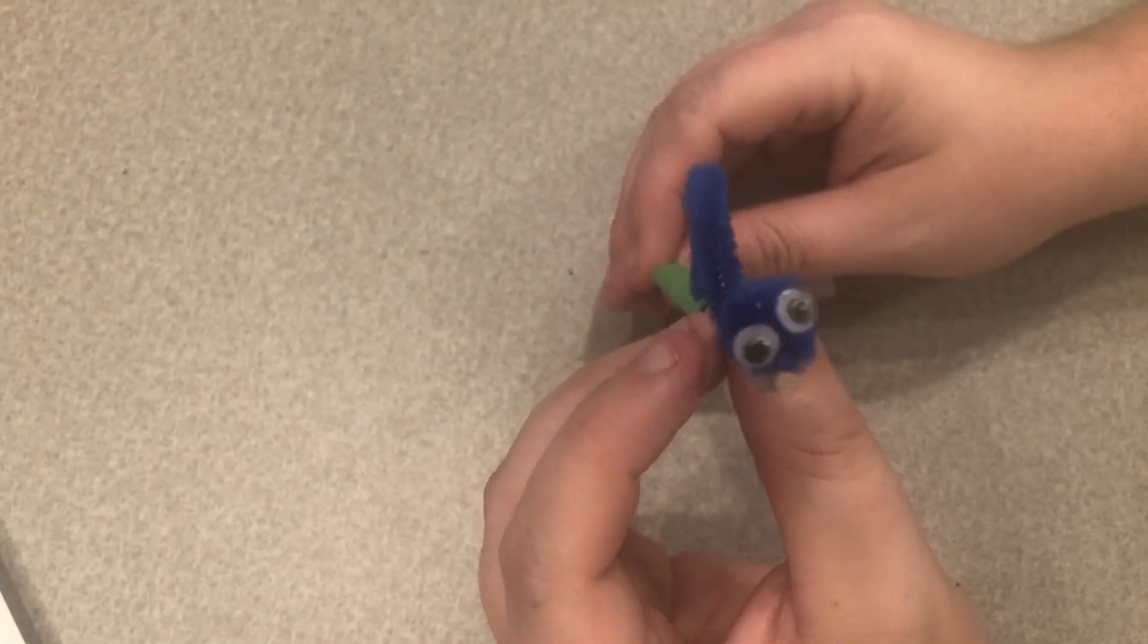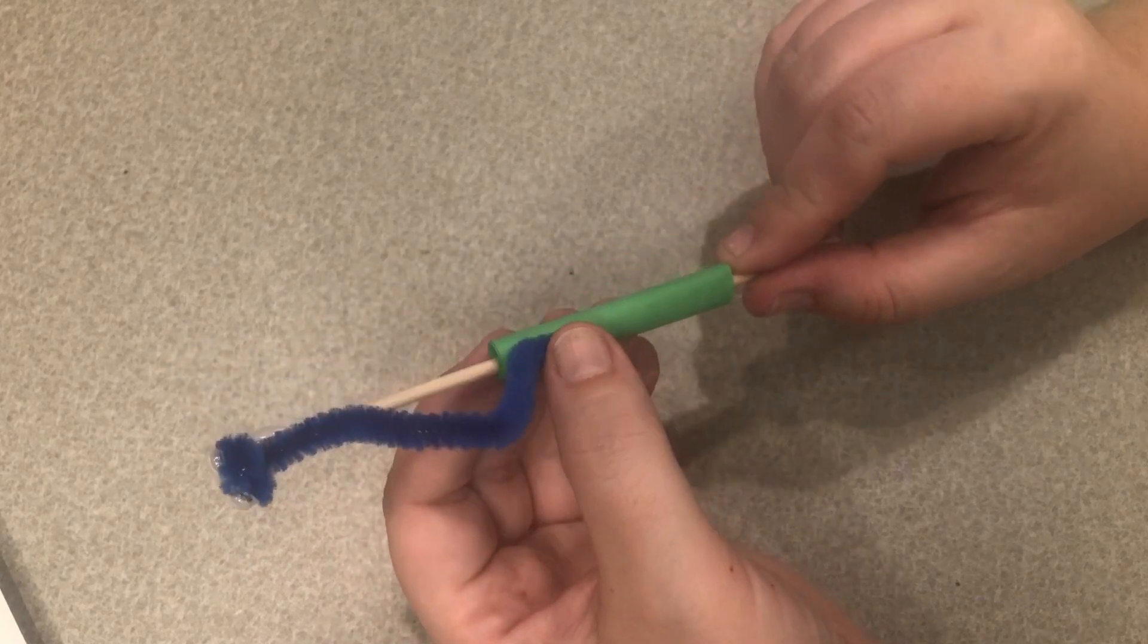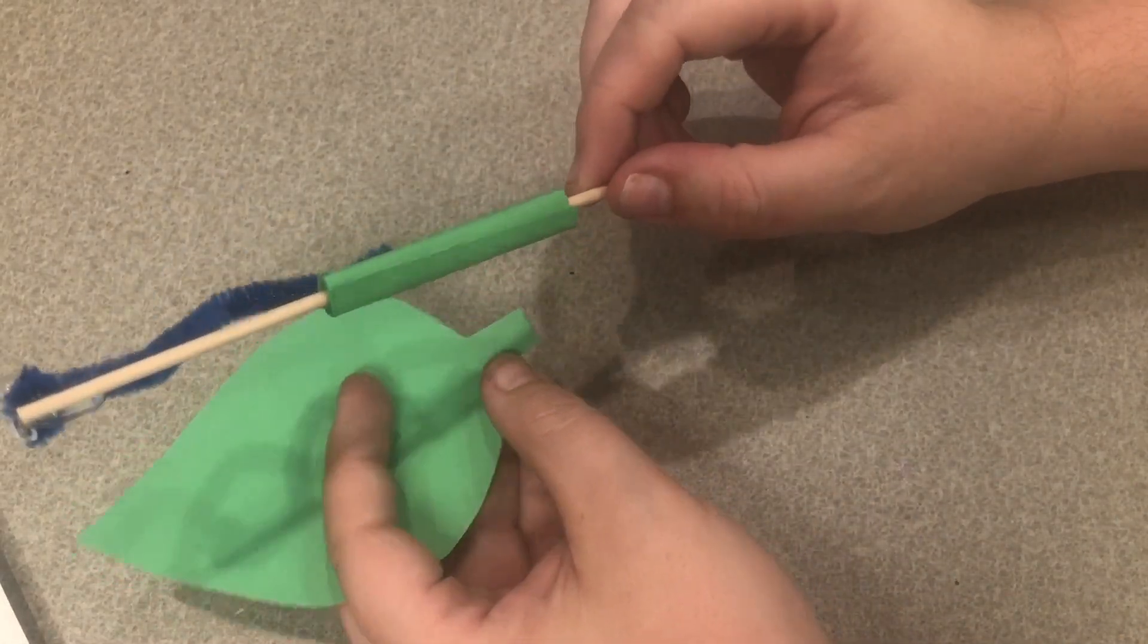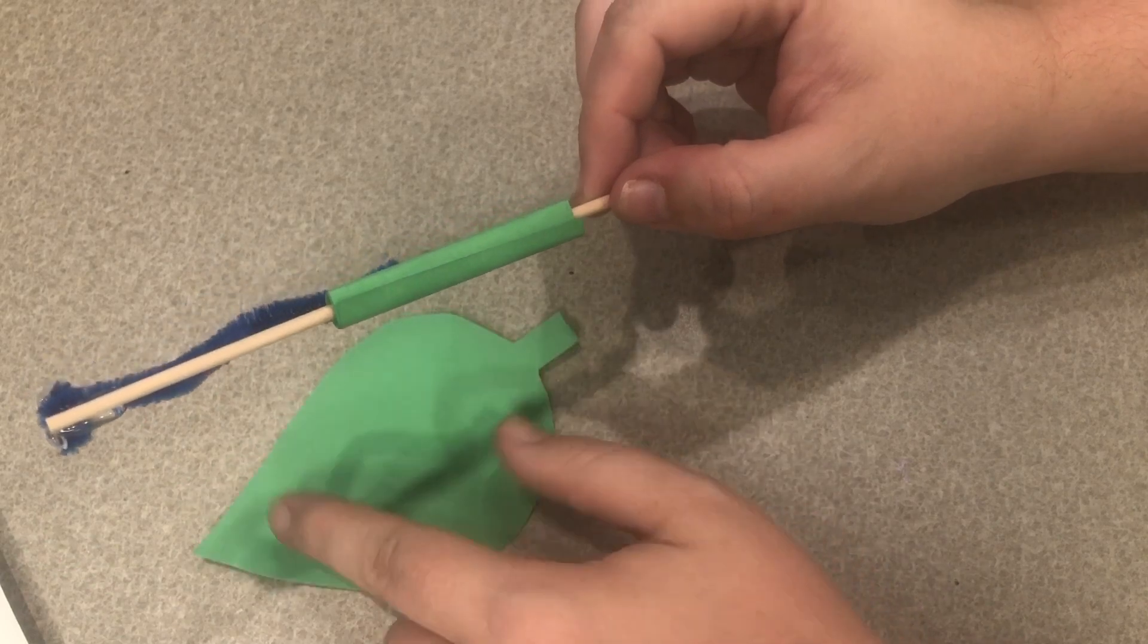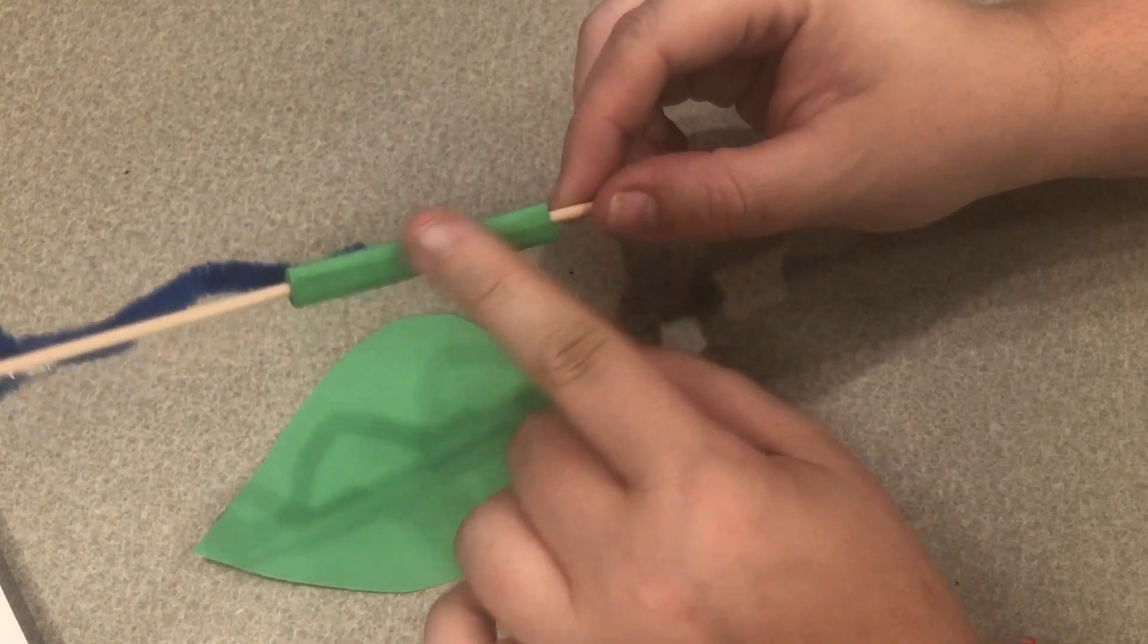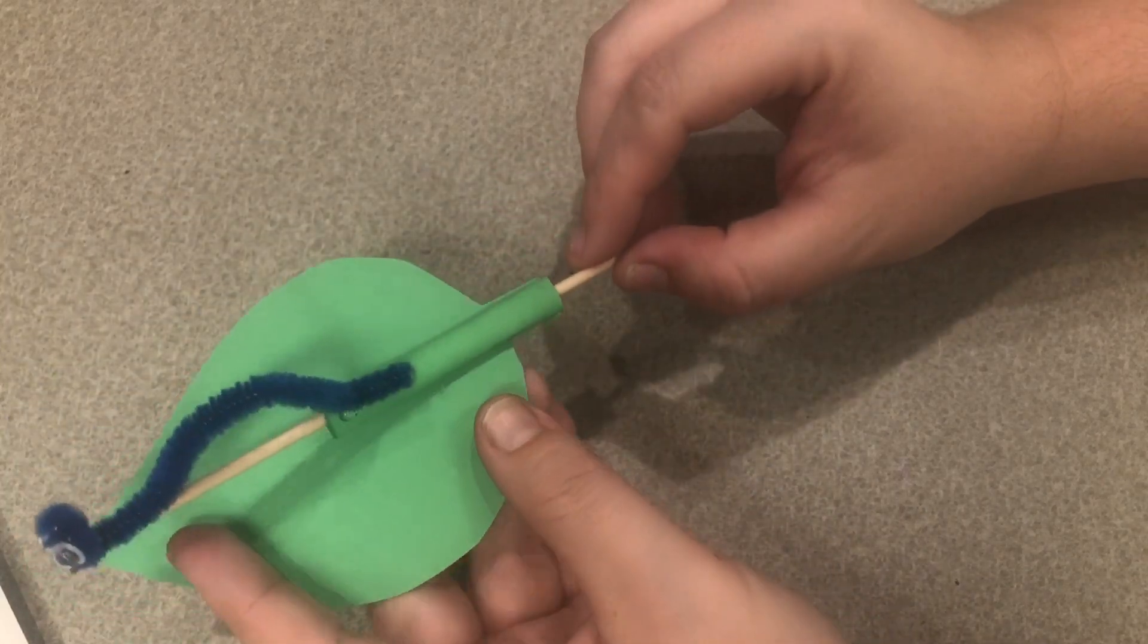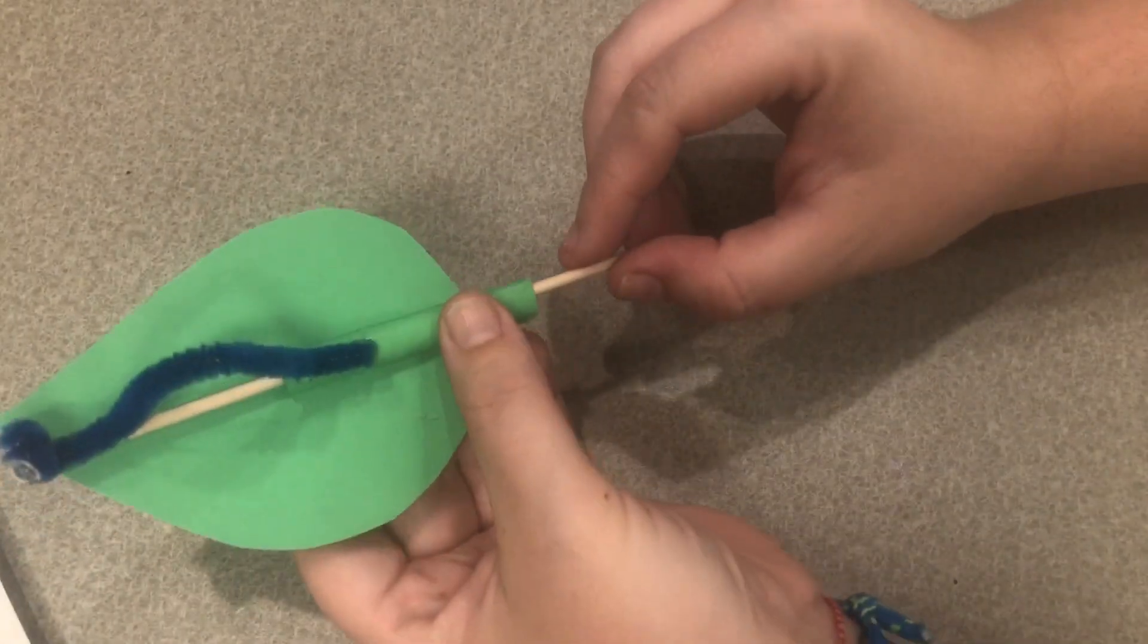Now whatever kind of glue you're using you just have to let this dry. Once it's dry we're going to add some glue to the bottom of the green tube here and we're going to glue that onto our leaf.